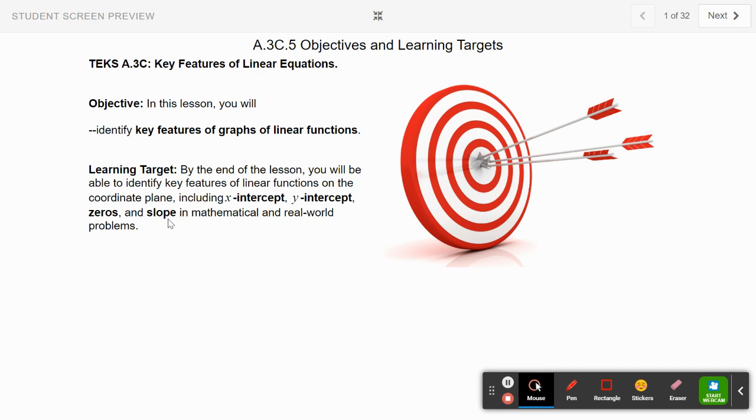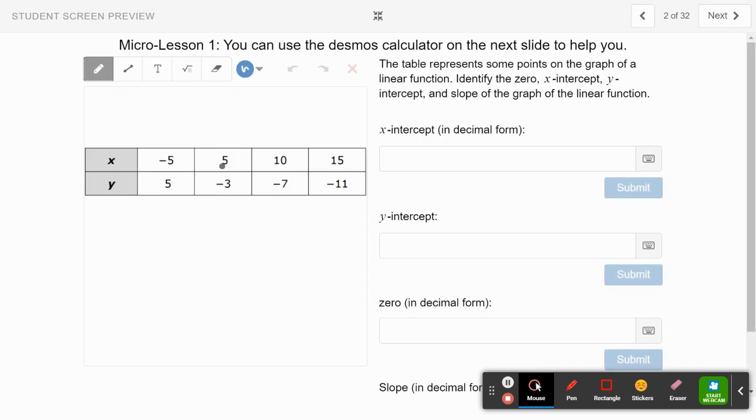Day one we're just doing mathematical problems. So we start out with this equation—we have our x and y values in a table, and we want to identify the x-intercept, the y-intercept, the zero, and the slope.